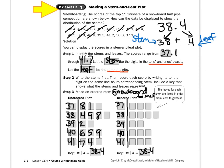39.3 — go to the 39, put a 3 after it, cross it out. 41.2 — go to the 41, put a 2 after it, cross it out. 38.3 — put a 3 after the 38 and cross it out. 37.1 — go to the 37 and put a 1 and cross it out.